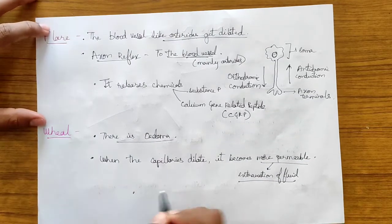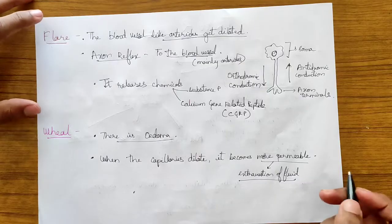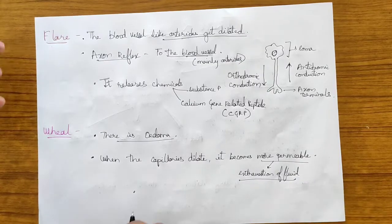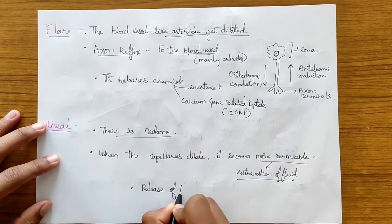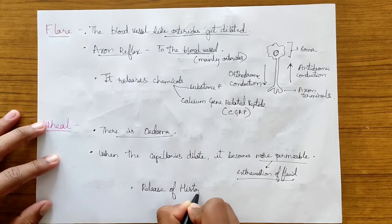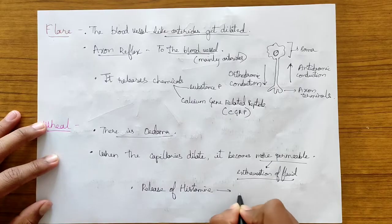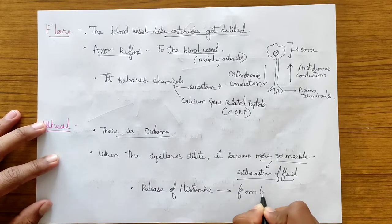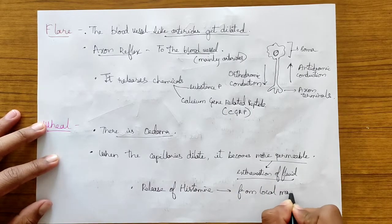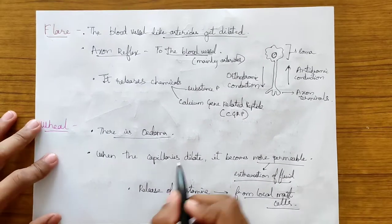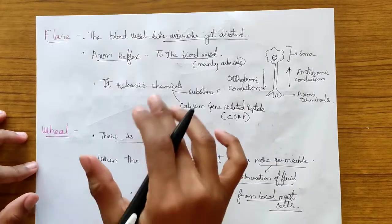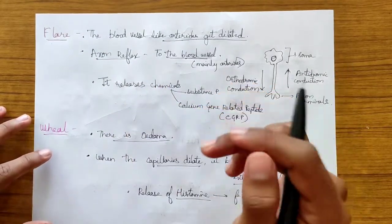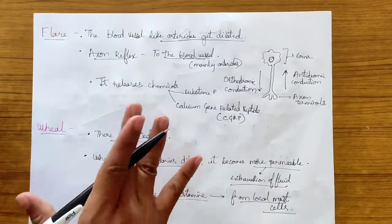Why do the capillaries become more permeable? This happens due to the release of histamine from the local mast cells. So the capillaries dilate due to the release of histamine, whereas in the red reaction the capillaries dilate due to the effect of pressure.